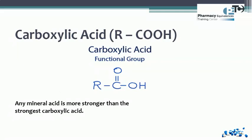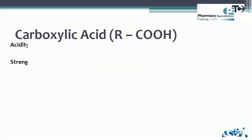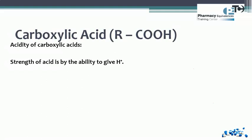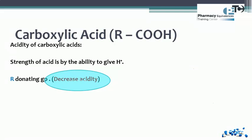If we compare any mineral acid with any carboxylic acid, the acidity of the mineral acid is greater. Here we will see factors affecting the acidity of carboxylic acids. Any group that gives the acid the ability to donate its proton will increase the acidity. An R group or any hydrocarbon is an electron-donating group — it donates electrons to the adjacent carbon, making it electron-rich, so it will not donate its proton easily. Therefore, an R group decreases the acidity of the carboxylic acid.